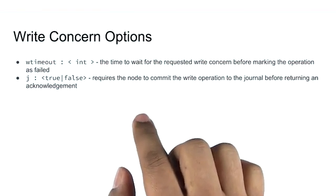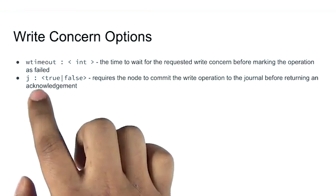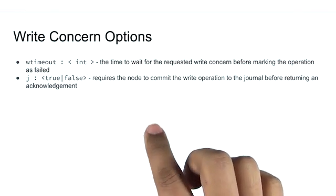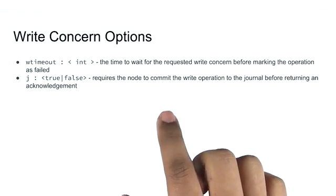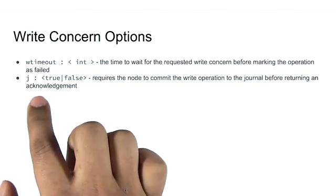Starting with MongoDB 3.2.6, a write concern of majority actually implies J equals true. The advantage of setting J equals true for any given write concern is that you have a stronger guarantee that not only were the writes received, they've been written to an on-disk journal.